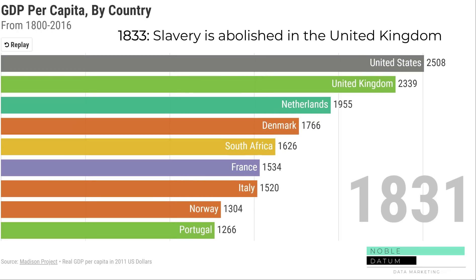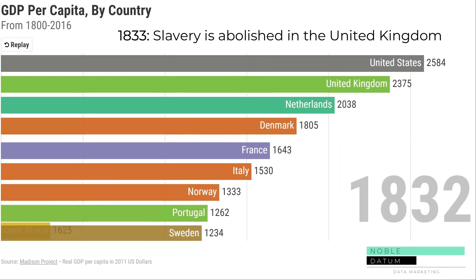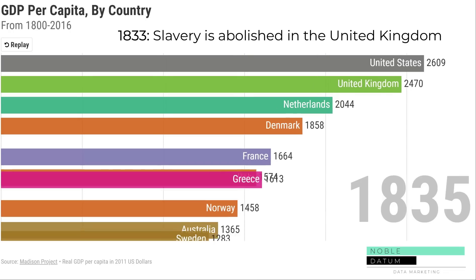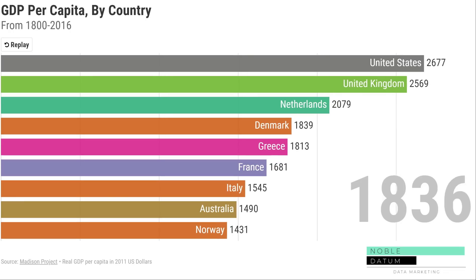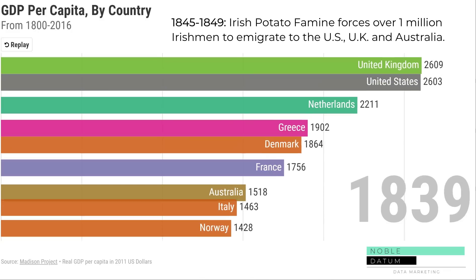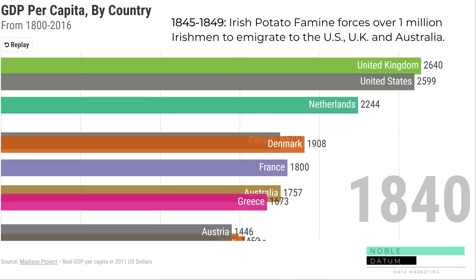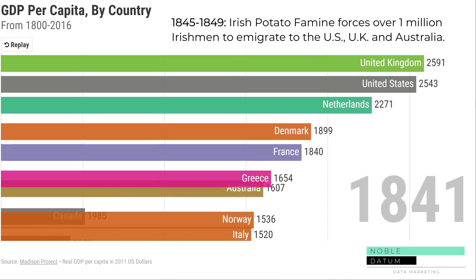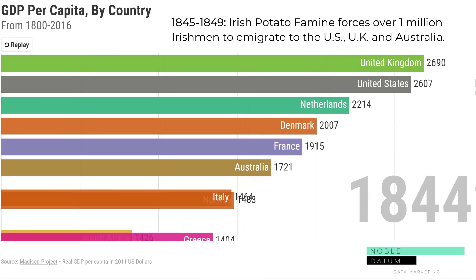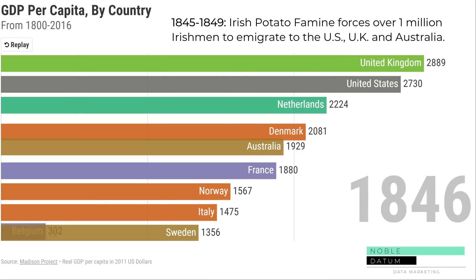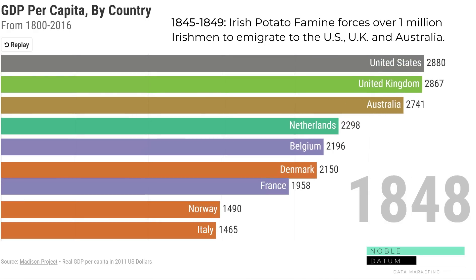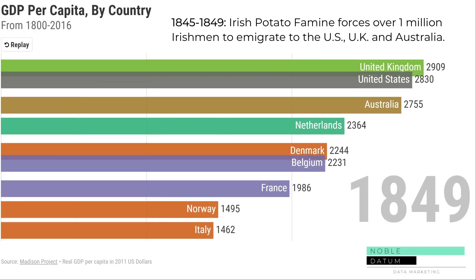In 1833, slavery is finally abolished in the United Kingdom. In 1845, Ireland was hit by the potato famine. Over 1 million Irishmen emigrate to the US, UK, and Australia. During this time, over 3 million people would emigrate from Europe to these three countries.